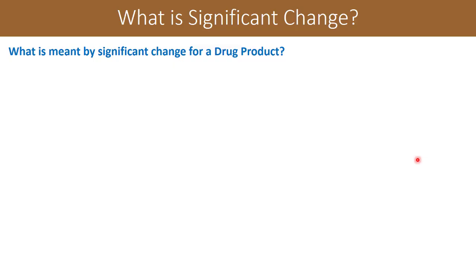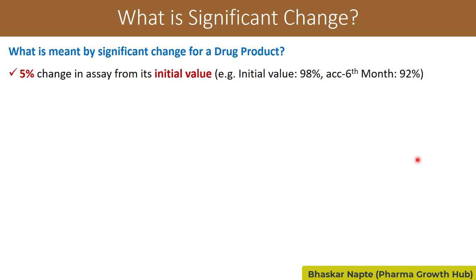Let us now move to the definition of significant change for drug products. For drug products, the definition of significant change depends on the parameter and the kind of dosage form. For assay, a five percent change from the initial value is considered a significant change. This five percent change doesn't mean only a decrease in assay value — it can also be an increase in assay value.